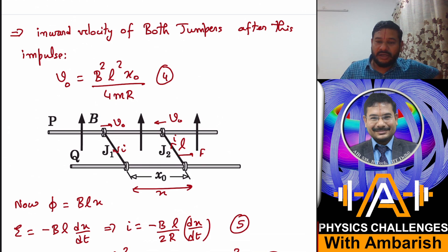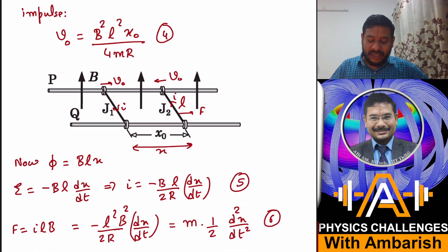Now again, let me start the clock again. Again I can write EMF - flux I can write now as B into l into x instantaneous flux. Now B is a constant, so dφ/dt, my EMF is minus dφ/dt, so that is minus B·l into dx/dt.